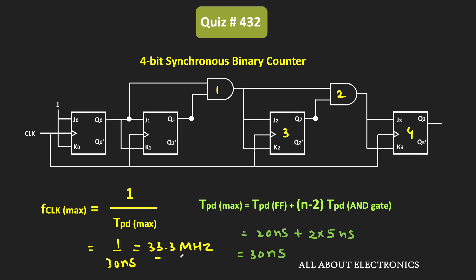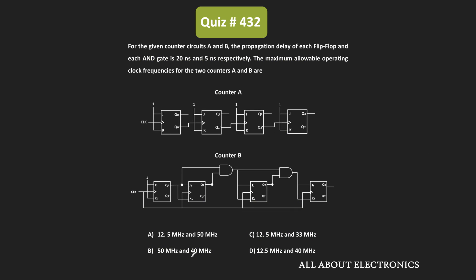So from this, we can say that for the first counter the maximum operating clock frequency is 12.5 MHz, and for the second counter it is 33.3 MHz. That means for the given question, option C is the correct answer.